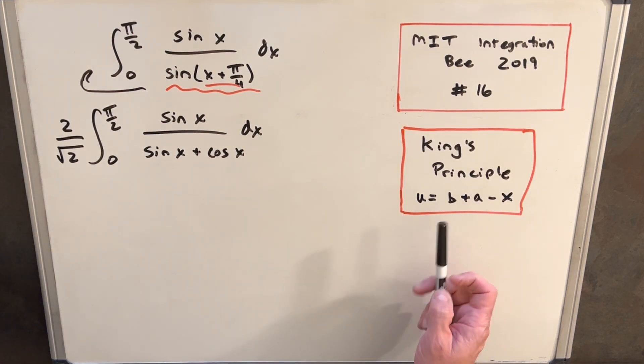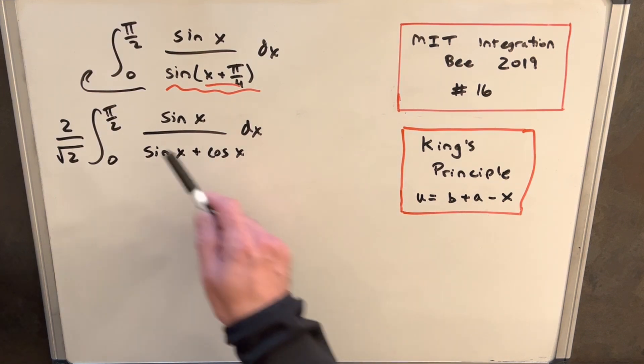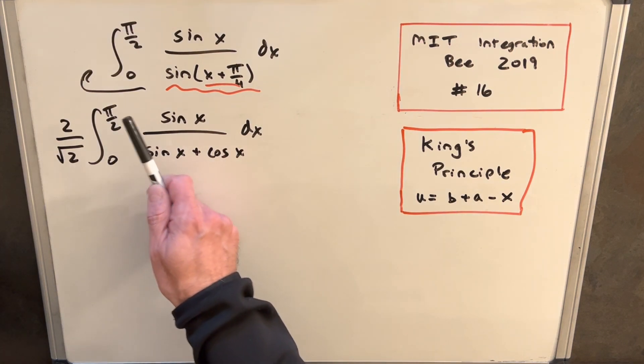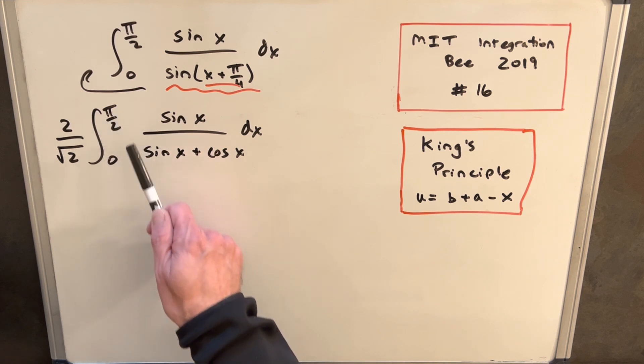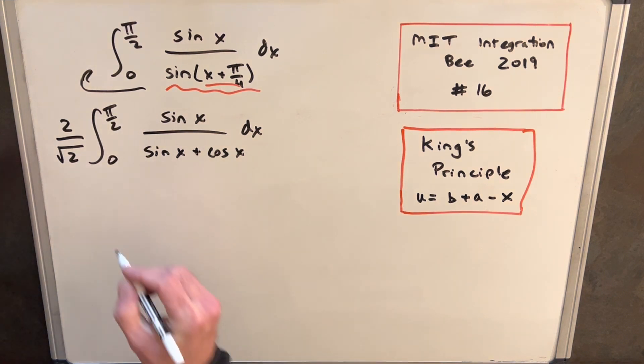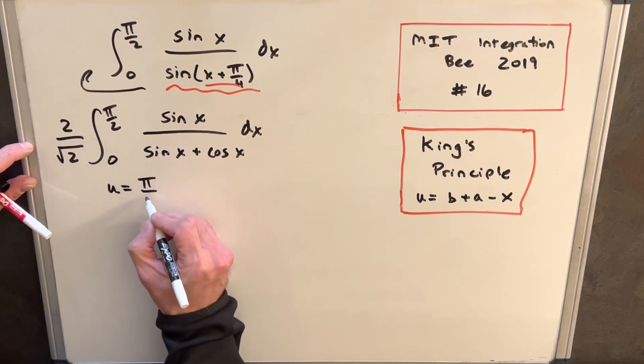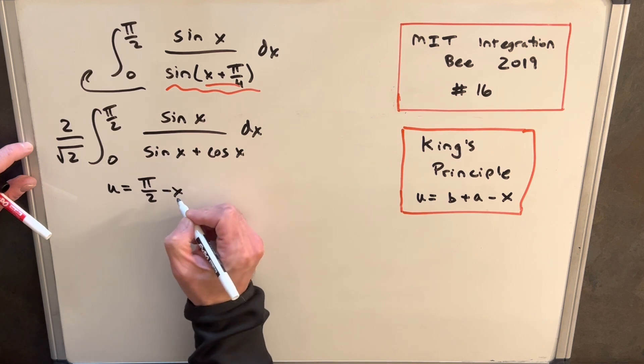So with King's Principle, we're going to make a substitution of u equals b plus a minus x, where b is this limit of the integral and a is this limit. Let's just see how this is going to work. So our u, we're going to say, is pi over 2 plus 0, but that's just pi over 2 minus x.